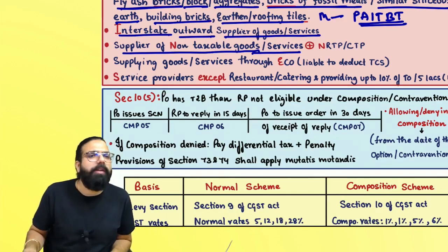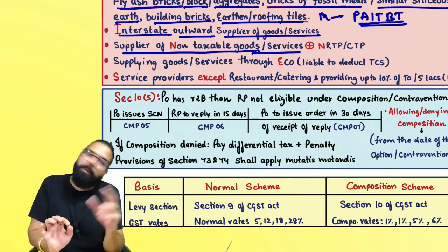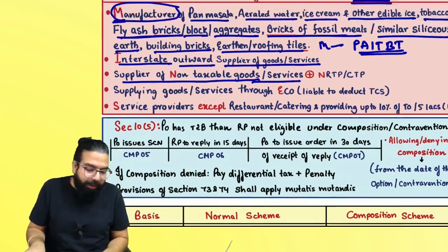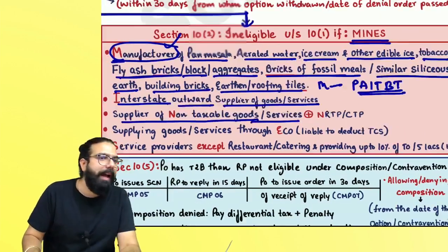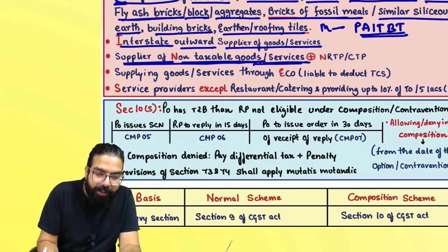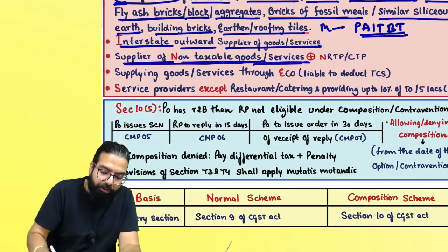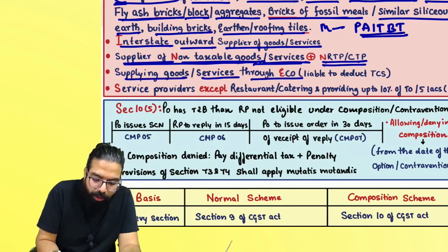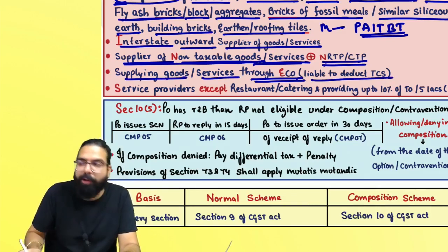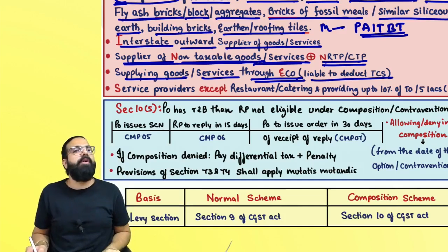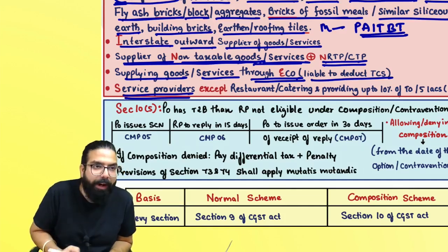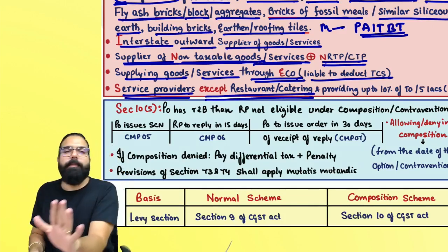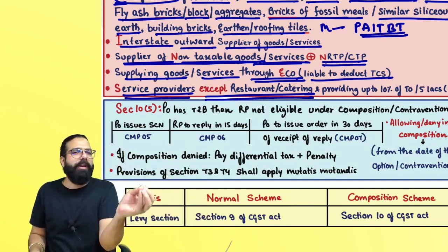The supplier of non-taxable goods could be a manufacturer-supplier or a trader buying and selling. E for E-commerce — if you are supplying goods or services through e-commerce and the e-commerce operator is going to deduct TCS, you become ineligible for composition scheme. S for Service provider — if you are a service provider other than restaurant or catering, all other service providers are ineligible under Section 10(1) read with Section 10(2).